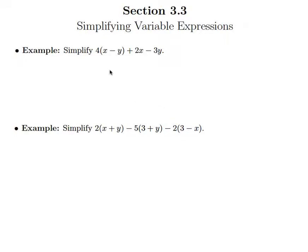In terms of identifying our like terms, we see that we have an x in here and an x out here. So it seems like I should be able to combine these, but of course this x is trapped inside parentheses. Same thing with this y here and this minus 3y out here. So we want to start by using our distributive property, which says we can take this number on the outside and distribute it through to both terms.